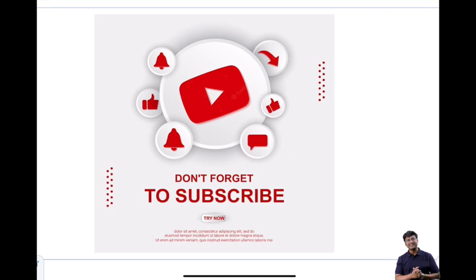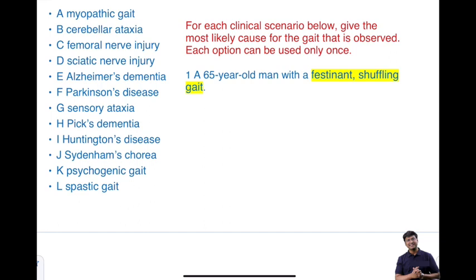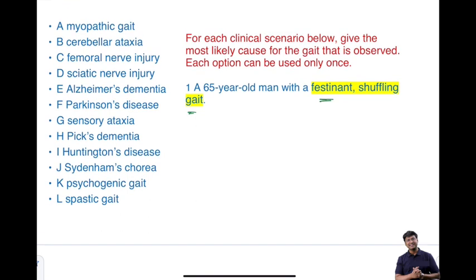First clinical scenario: a 65-year-old man with festinating shuffling gait. This is a very common clinical scenario asked in exams and encountered in clinical practice. Among the various neurological conditions, festinating shuffling gait is a characteristic feature of Parkinson's disease.